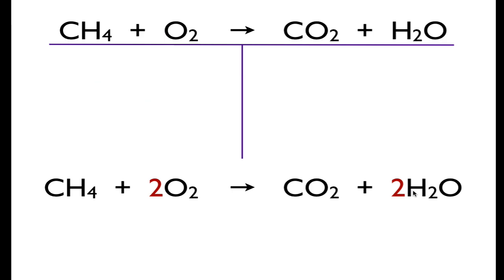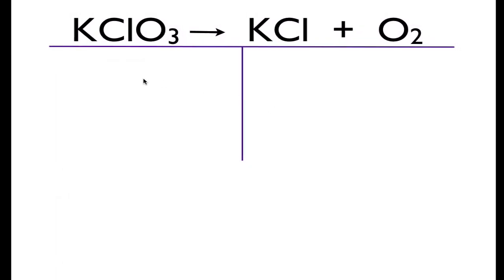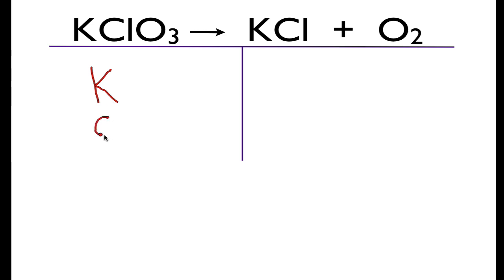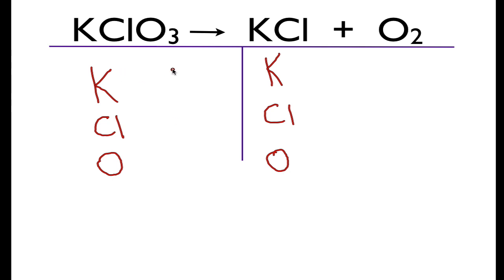Let's go on and do another one. On the left-hand side we have potassium, chlorine, and oxygen, and I'm going to write down the same elements on the right. On the left I have one potassium, one chlorine, and three oxygens. On the right I have one chlorine, one potassium, and two oxygens. I have one and one matching on both sides, but I have three oxygens on the left and two on the right.